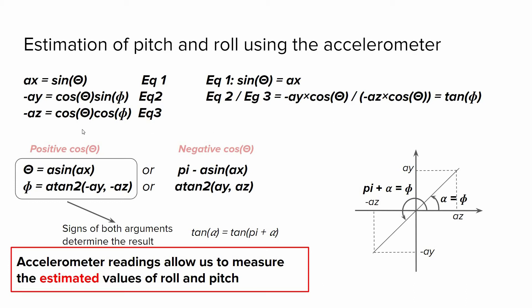And then finally, we can estimate theta and phi. Theta is either equal to arcsine of ax or pi minus arcsine of ax. In the first case, we have positive cosine theta. In the second case, we have negative cosine theta. Based on the sign of cosine theta, we have different values for phi.